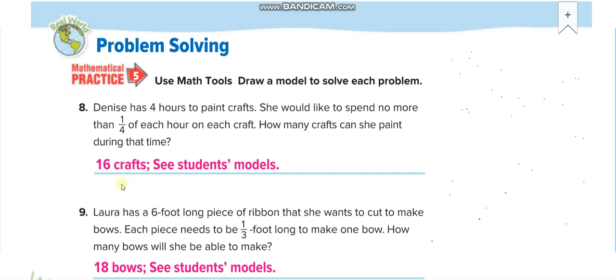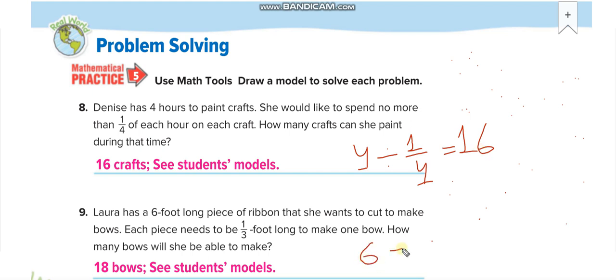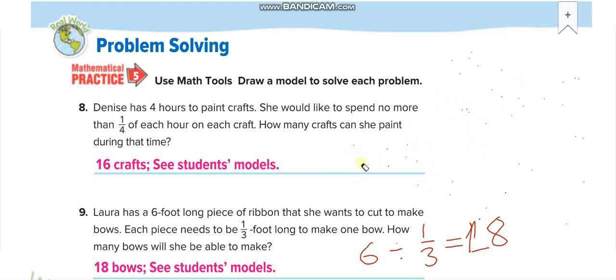The same thing again — here they are just writing the answer, but let me solve one for you. 4 divided by 1/4: multiply the whole number with the denominator, 4 times 4 equals 16. And 6 divided by 1/3: 6 times 3 equals 18.